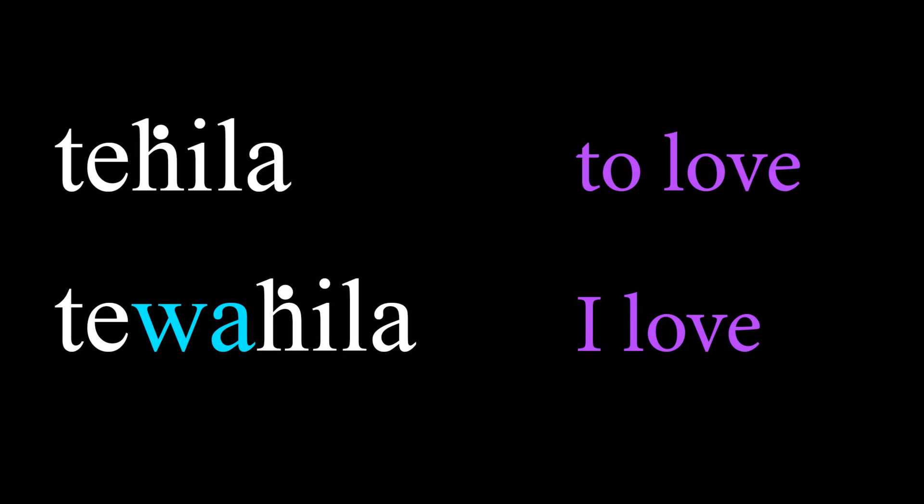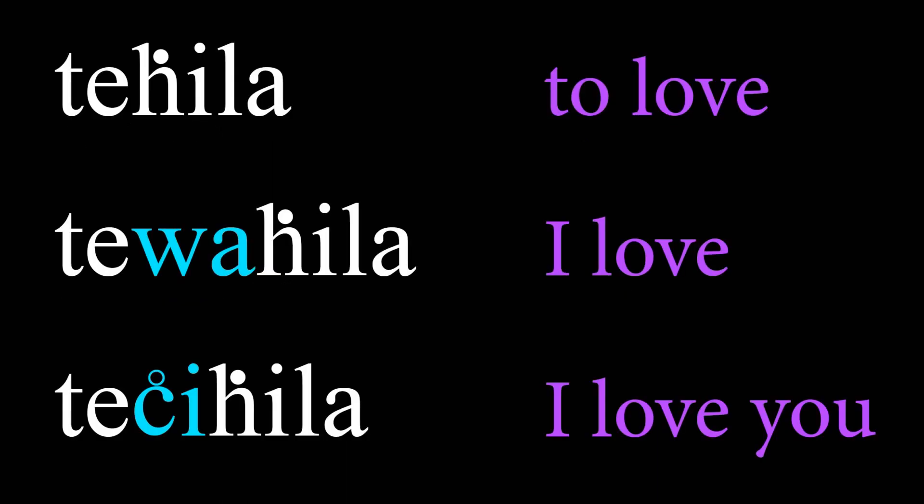Now, let's add a third thing to this word. So far we have two things: the subject and the verb — 'I' is the subject, 'love' is the verb — in one Lakota word, tewahila. Now let's add a third thing: 'I love you.' Look at how that transforms. The wa transforms to a chi — the C with a circle over it and the letter I. It happened in the same location. So tewahila, which means 'I love,' transforms into techila, which means 'I love you.'